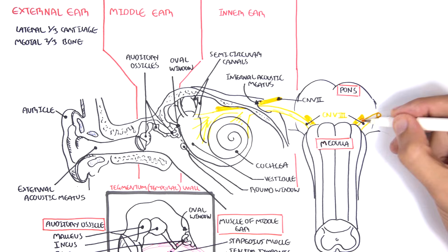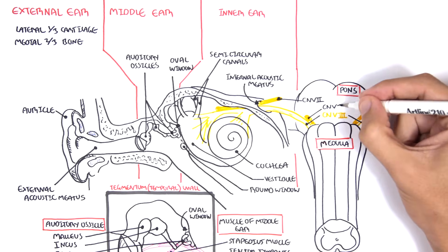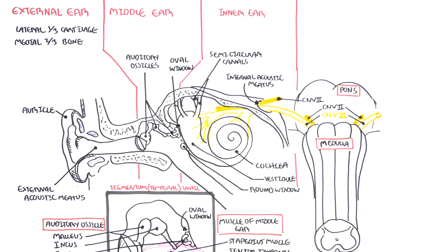The facial nerve also originates in the pons next to the vestibulocochlear nerve and is responsible for muscles of facial expression, secretory glands, amongst many other things.